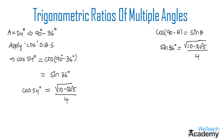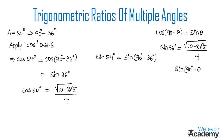So cos 54 degrees equals sine 36 degrees, which is under root of (10 minus 2 root 5) divided by 4. Now let us find the value for sine 54 degrees. In order to find sine 54 degrees, let us apply sine on both sides. We get sine 54 degrees is equal to sine(90 degrees minus 36 degrees), which is in the form of sine(90 degrees minus theta) equal to cos theta.